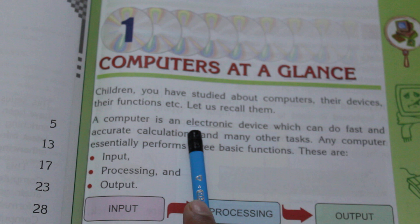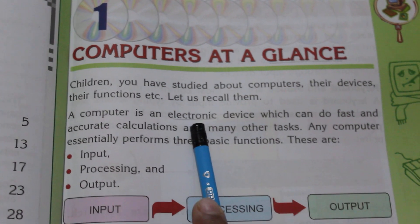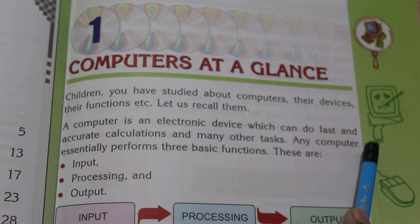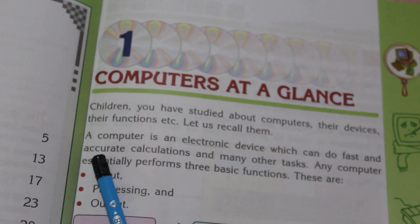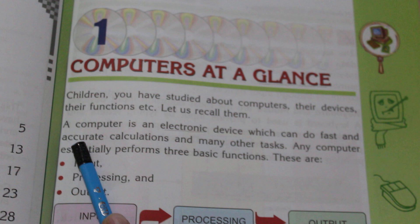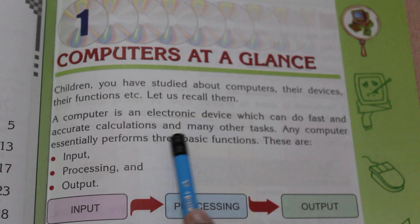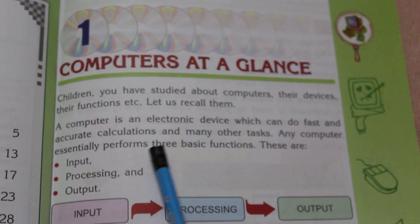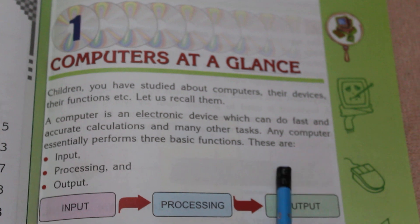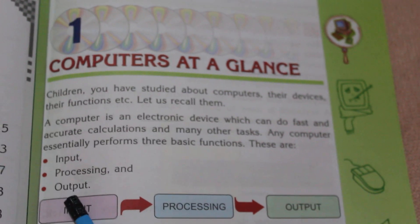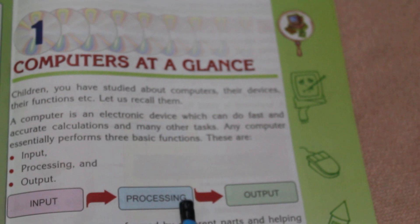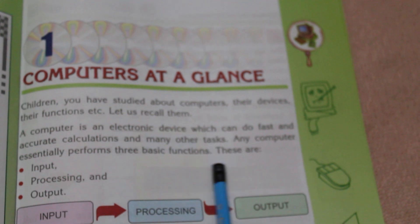A computer is an electronic device. Electronic means a device that works with the help of electricity, which can do fast and accurate calculations — accurate means correct, without mistakes — and many other tasks. Any computer essentially performs three basic functions: input, processing, and output.